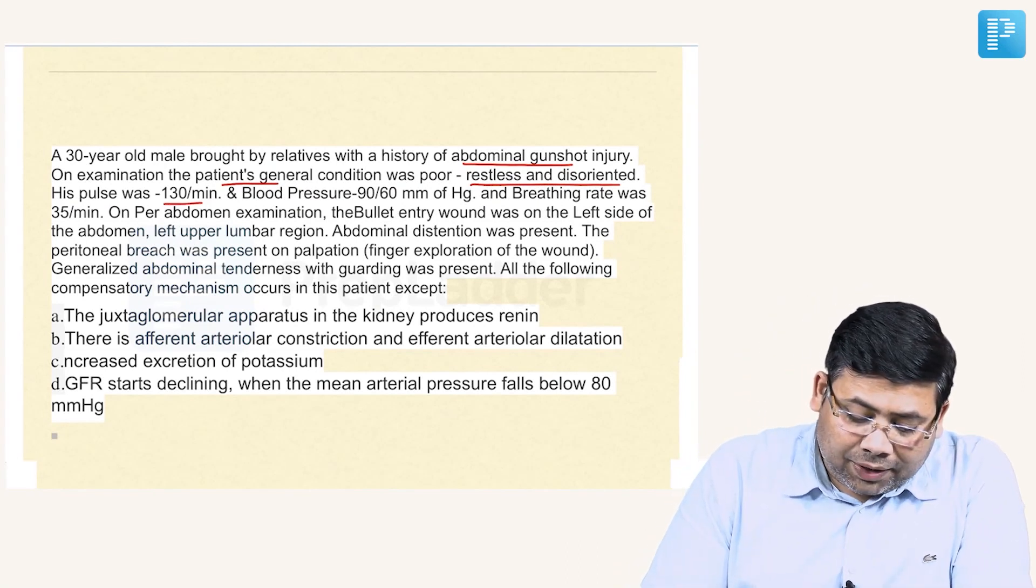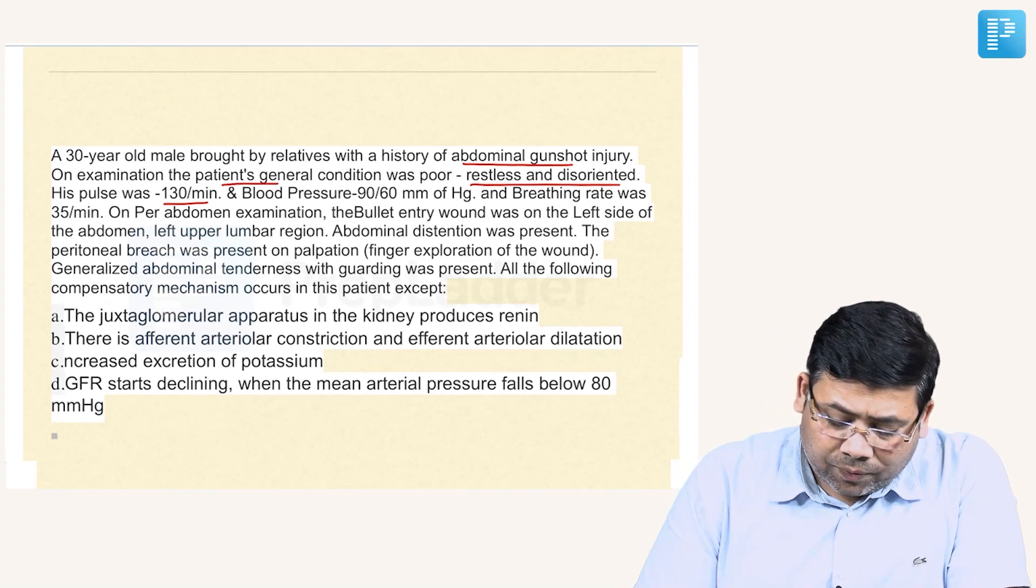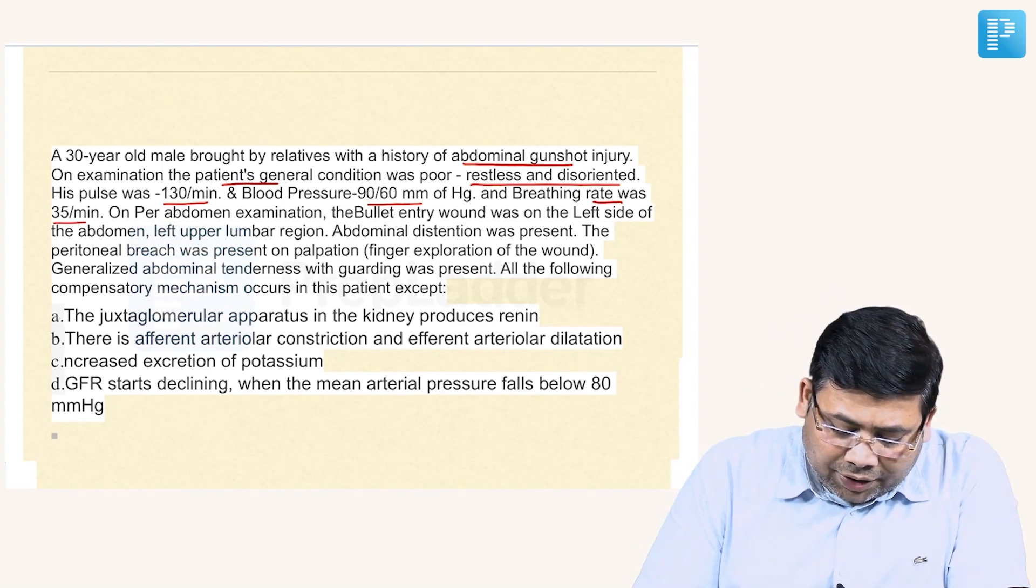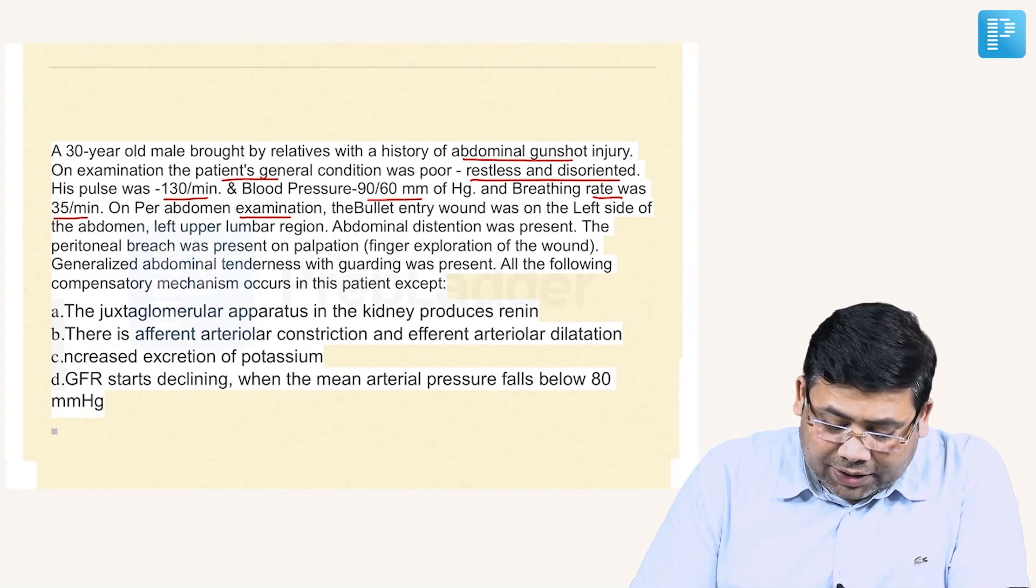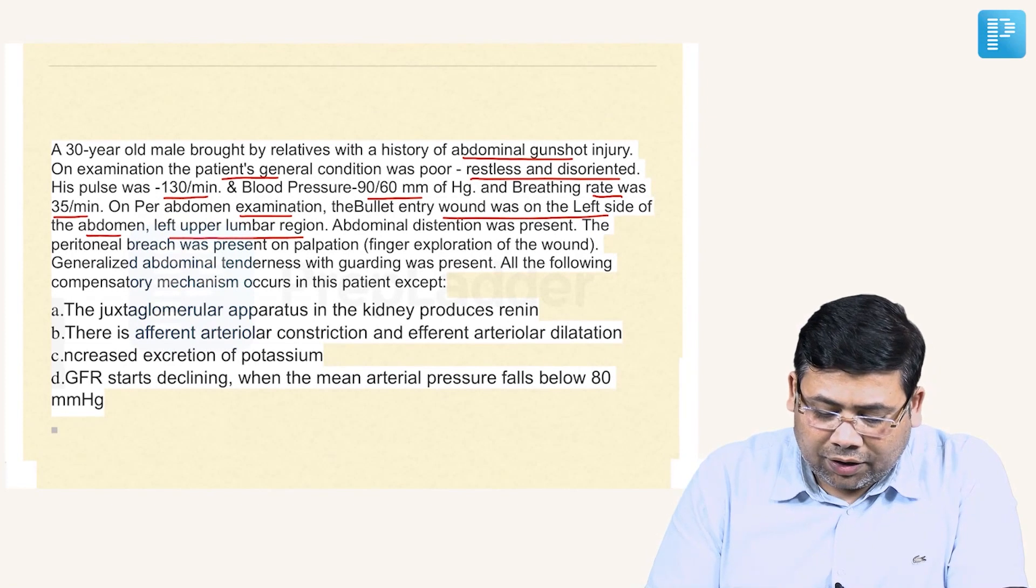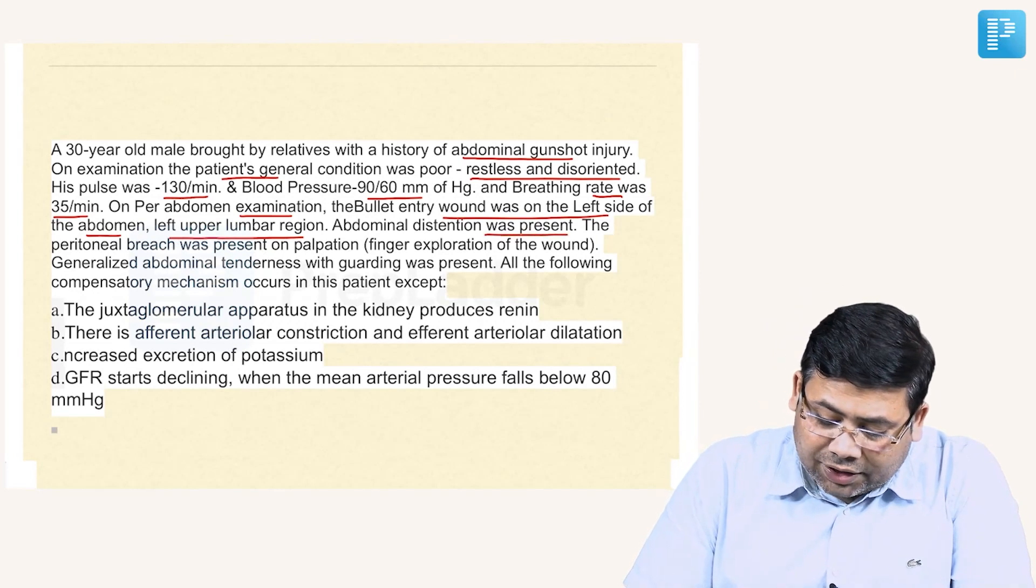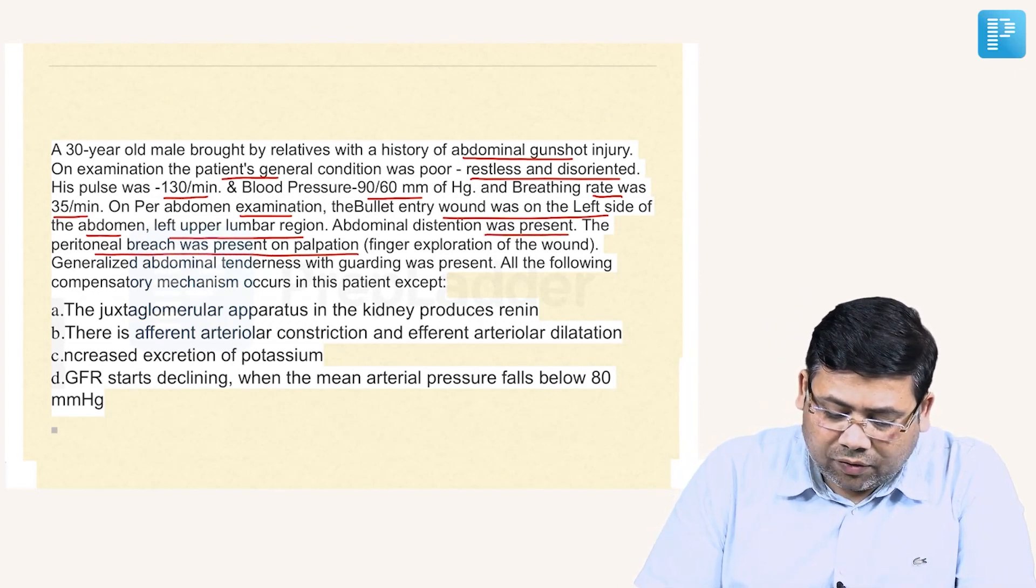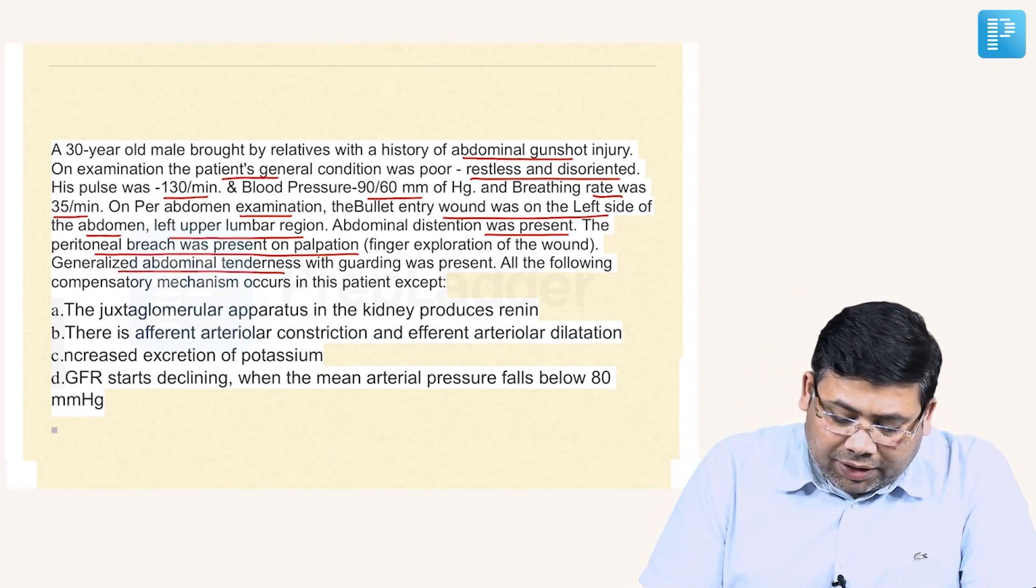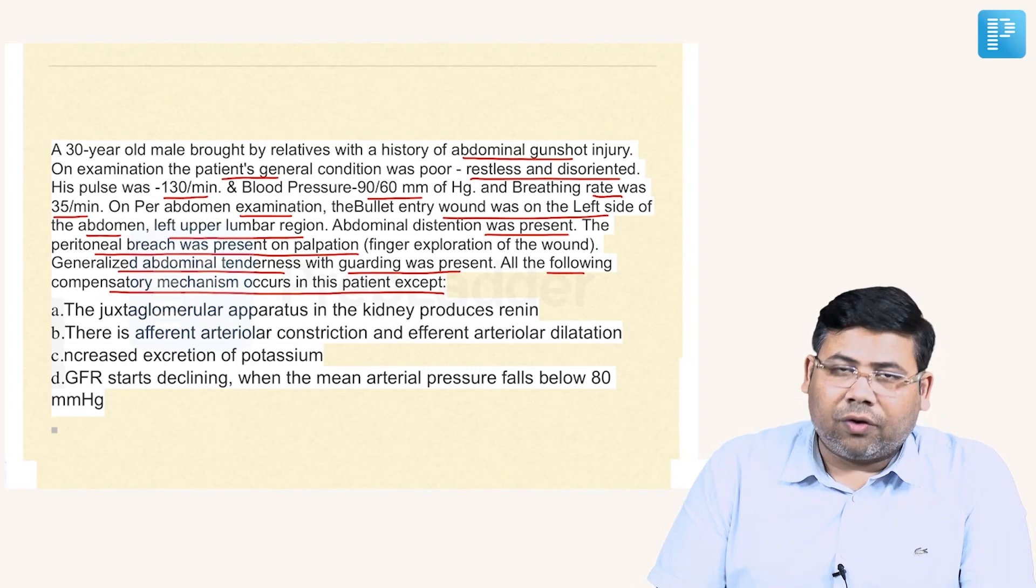Let's see - the pulse was 130, indicating grade 2 or 3 hypovolemic shock. Blood pressure showed hypotension, grade 3 is evident. Breathing rate was 35 - yes, it's grade 3 now. Per abdomen examination, the bullet entry was found on the left side of the abdomen, left upper lumbar region. Both are involved. Abdominal distension was present and the peritoneal breach was present on palpation. The generalized abdominal tenderness with guarding was present.